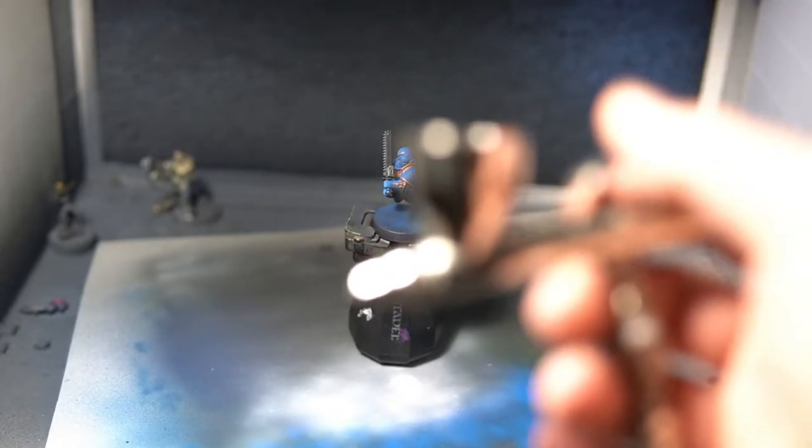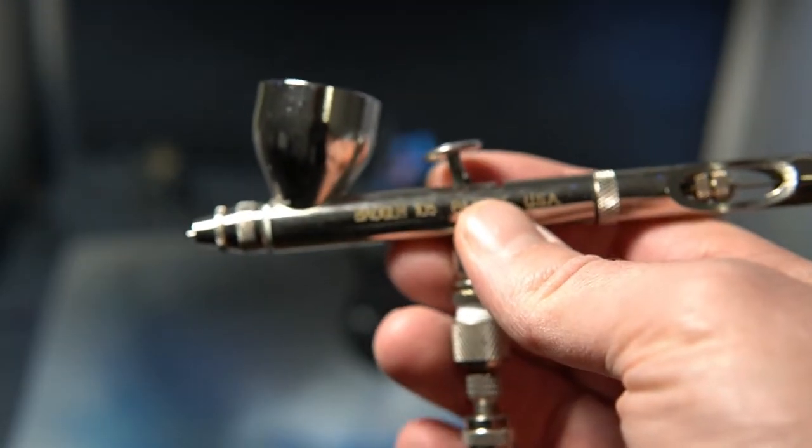So with all that said, let's talk about the stats. The Badger is a 0.5 millimeter needle, a dual action gravity feed airbrush, and it has a one third ounce cup. And so you're asking, what does all that mean and why should I care?